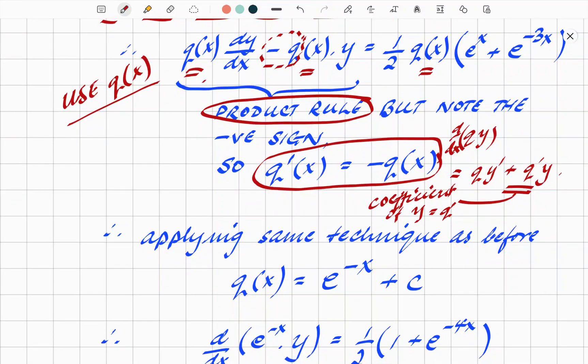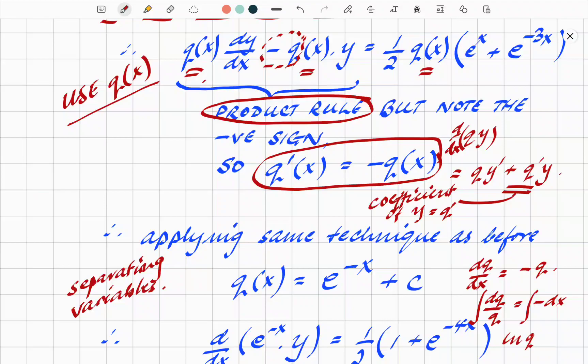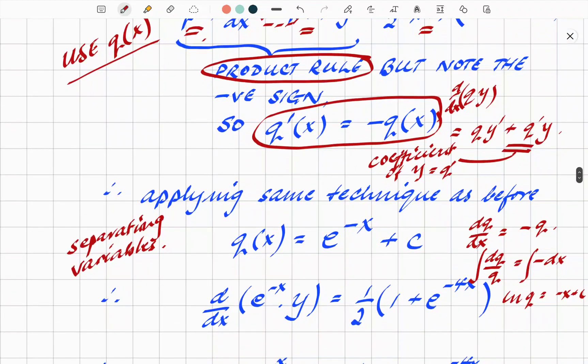Applying the same thing we did before, separating variables. Remember what we had previously is that if dq/dx = -q, therefore dq/q, and it depends on which way around you want to put it, is -dx, integrate both sides, and we get ln(q) = -x + C, etc. That's where that result comes in. Eliminating the ln, you get q = e^(-x) plus C.